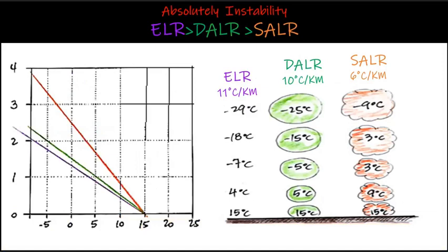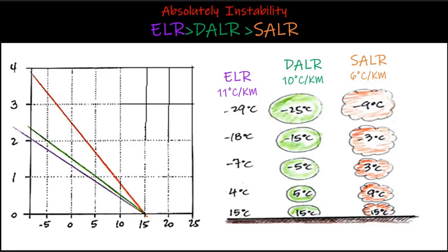Absolute instability: both parcel lines are on the right or warm side of the environment lapse rate. This means that air of any relative humidity will cool more slowly than the environment and will therefore always be warmer than its surroundings. Air parcels will be buoyant and rise like hot air balloons, tending to create storms. The condition is: environment lapse rate > dry adiabatic lapse rate > saturated adiabatic lapse rate.